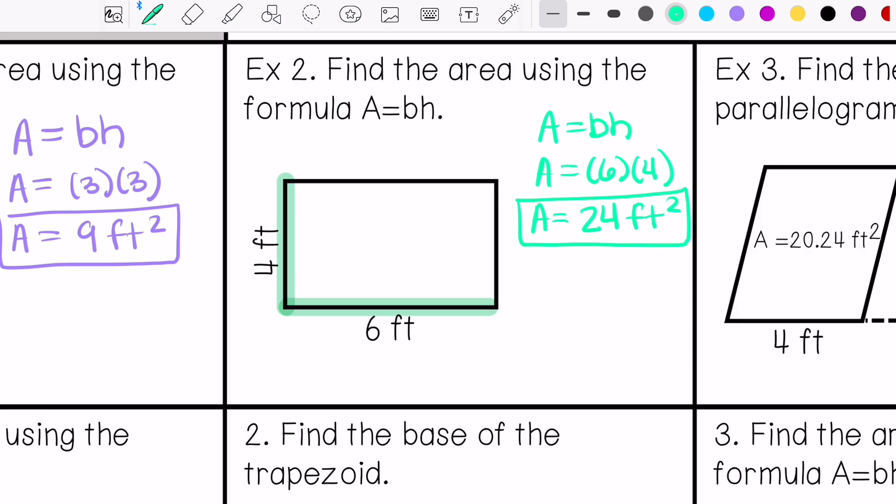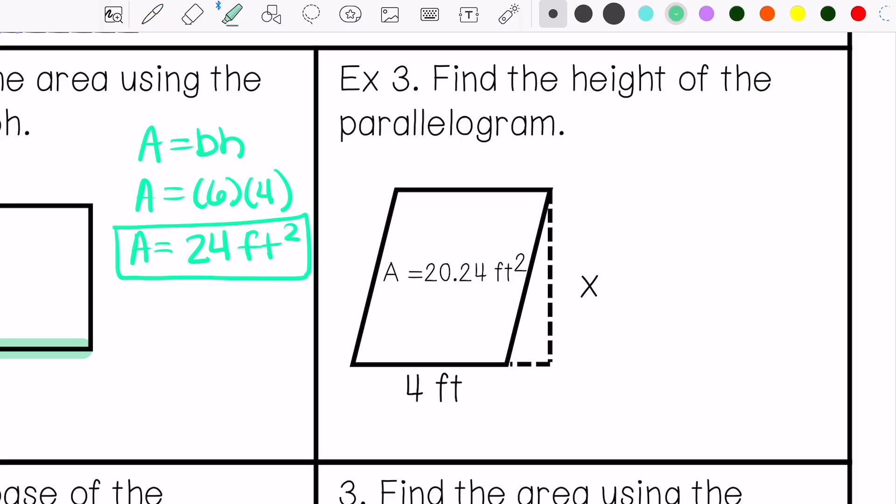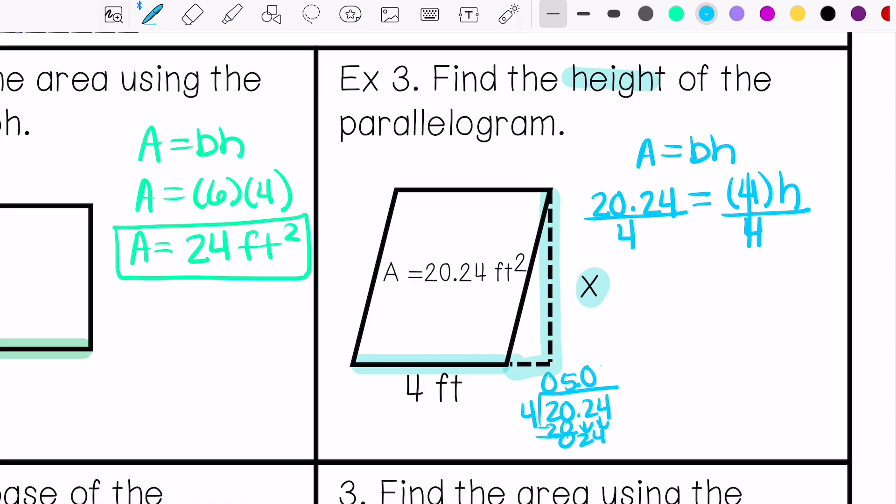Example three, find the height of the parallelogram. I'm going to substitute what I know. The area in this case is 20.24 feet squared. The base is 4. And then we don't know the height, it's unknown. And then I would solve this like a one-step equation. So my height is 5.06 feet.